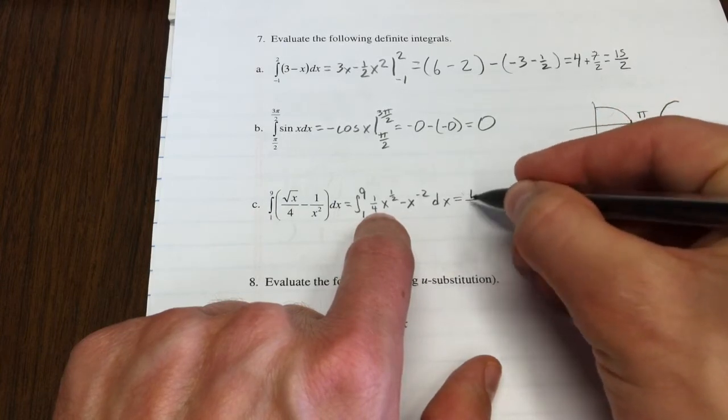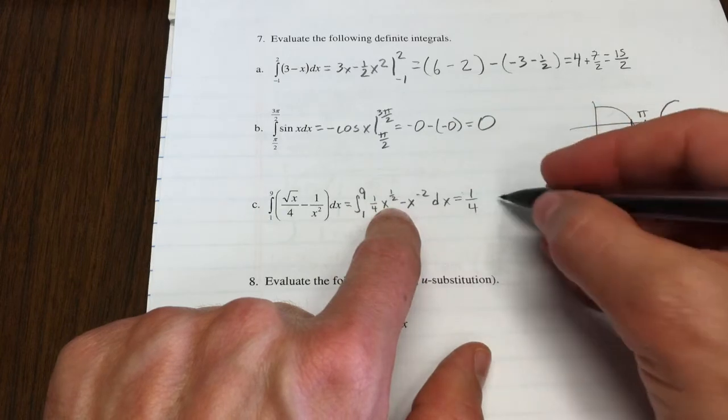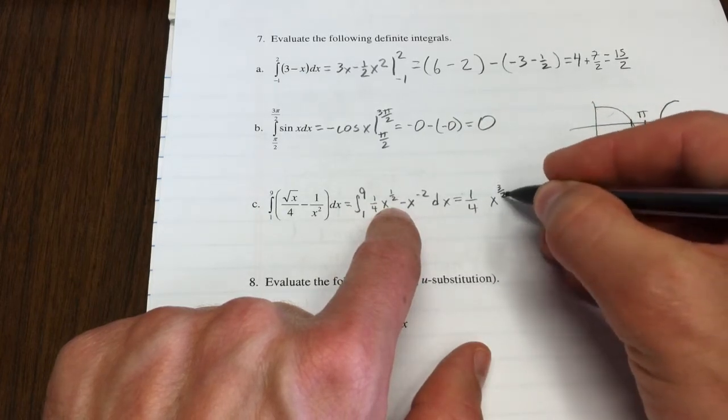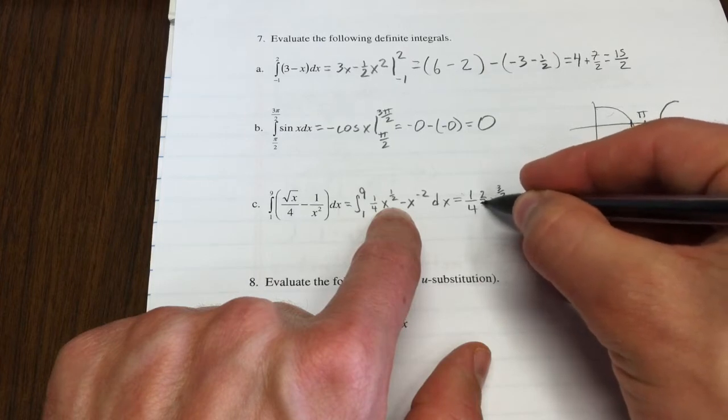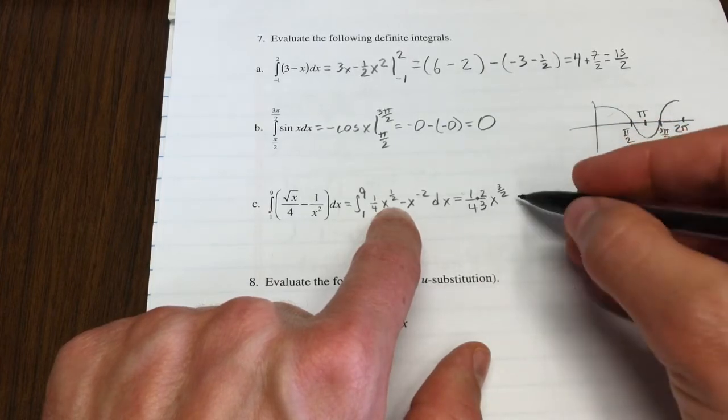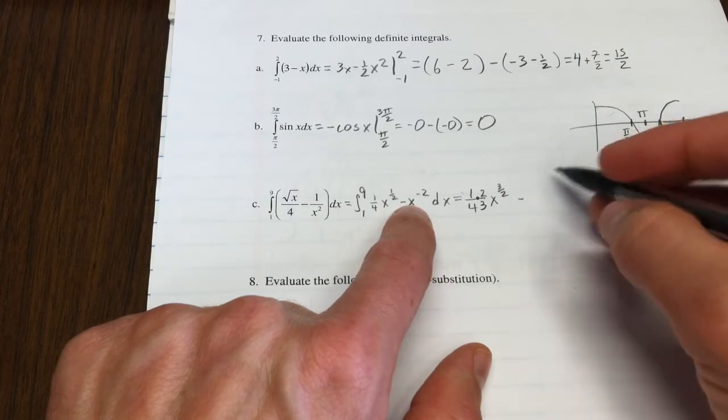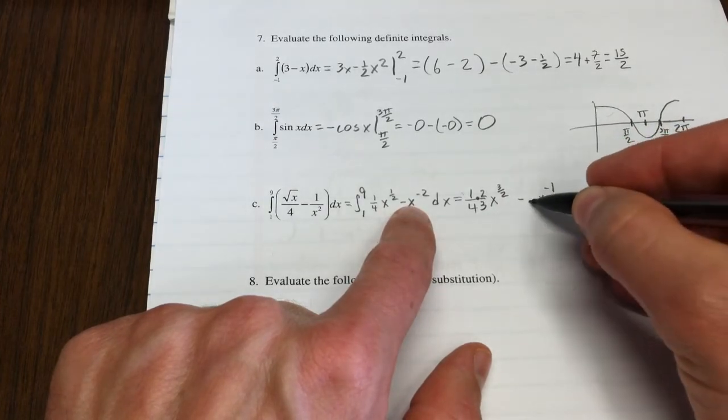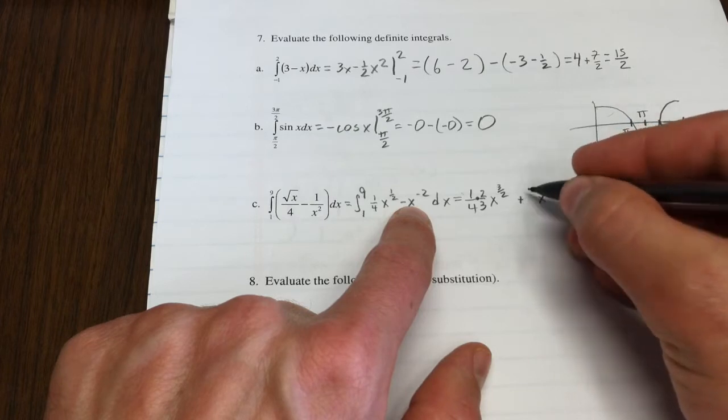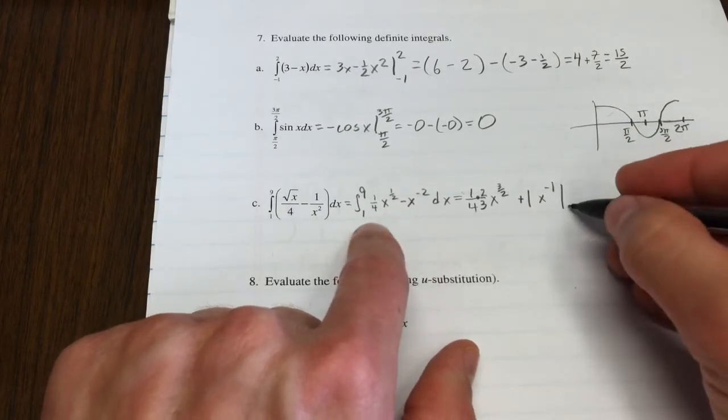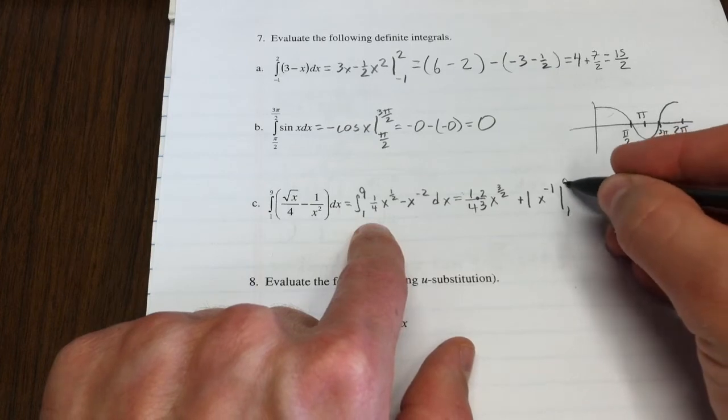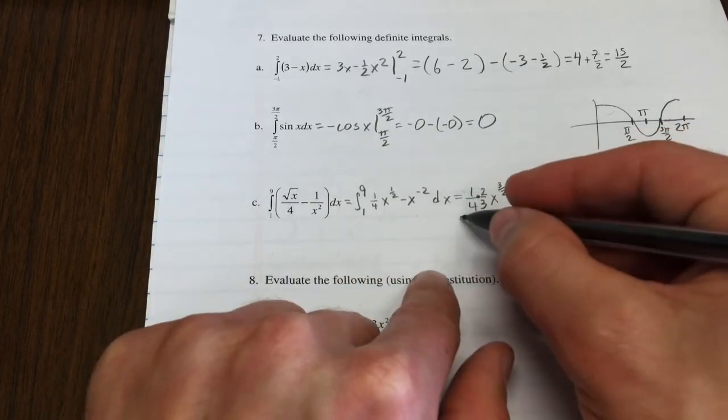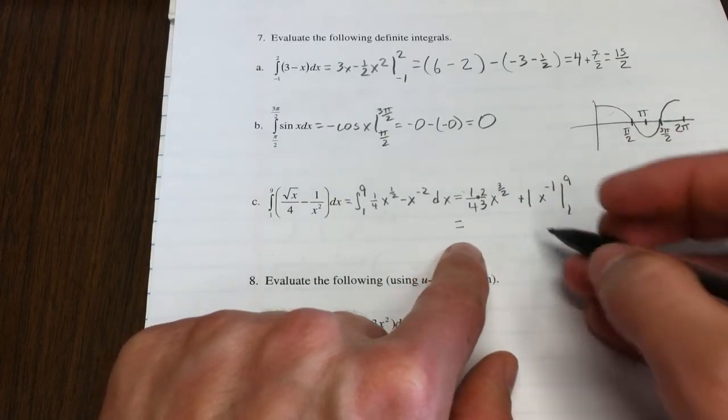I'll leave my constant, x to the one-half, add 1 to the power. So that's x to the three-halves. Multiply times the reciprocal. Minus, add 1 to the power, that's negative 1. Reciprocal of negative 1 is negative 1. So that just flips the sign. Evaluating from 9 to 1. So what shall we do here?